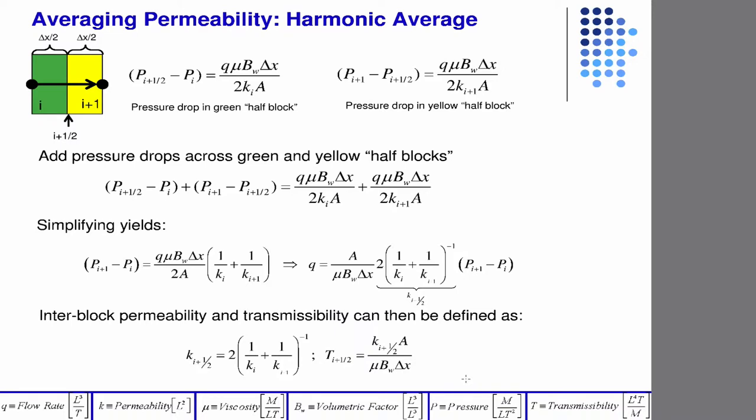I want to go through this kind of quick because I want to do something kind of what I think is fun. We'll see if you guys think it's fun. So, ultimately, if all you have is heterogeneity and the permeability, then your permeability turns out to be the harmonic mean, and your transmissibility at the boundary turns out to be that.